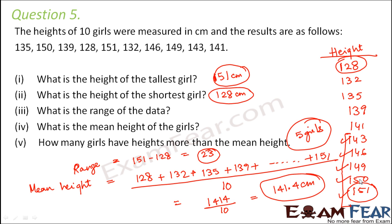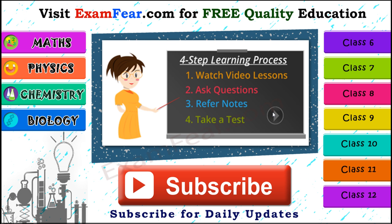So you see, do you see the advantage of arranging the data in increasing order? It becomes easier for you to calculate the range. It becomes easier for you to decide which all data are greater than a particular value, which all of them are greater than the mean height, which all are less than the mean height. So that means arranging the data in tabular form helps. Thank you.